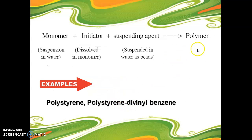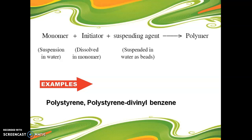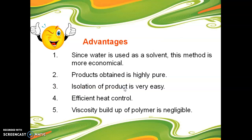This is the simple schematic representation of preparation of suspension polymers. Here the monomer is suspended in water, the initiator is dissolved in the monomer, and a suspending agent is used to control coagulation. At the end we obtain the polymers. Polystyrene and polystyrene divinyl benzene are prepared using suspension polymerization.